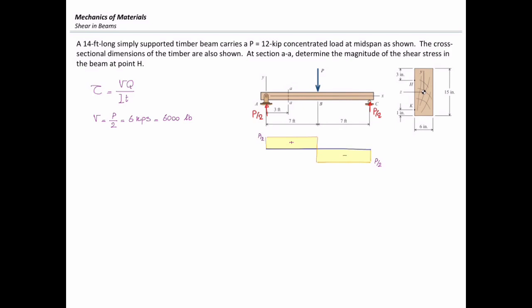The next parameter I want to determine is the moment of inertia. This is a rectangular section and the moment of inertia is simply calculated by base times height cubed over 12. The base is 6 inches and the height is 15 inches, giving a moment of inertia equal to 1687.5 inches to the fourth.